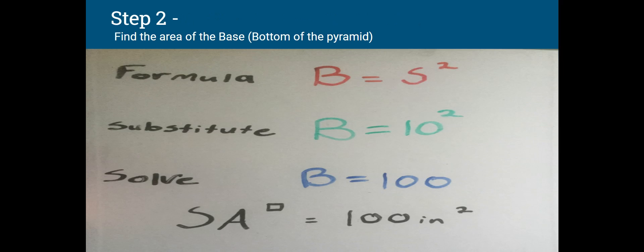Moving on to step two. Find the area of the base, which is the bottom of the pyramid. Our formula is B equals S squared. When we substitute, we would substitute that S for 10 because 10 was our base. And then when we solve, 10 squared would give us 100. So the surface area for just the bottom of our pyramid is 100 inches squared.